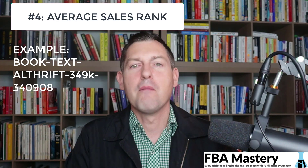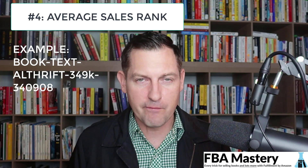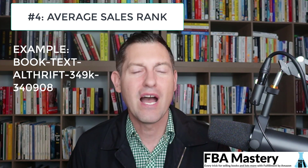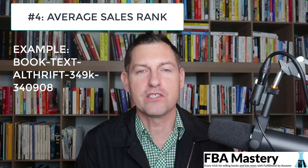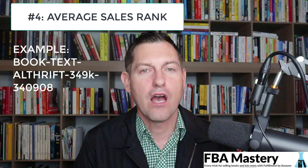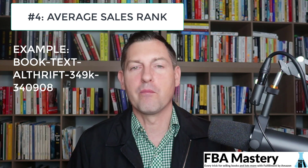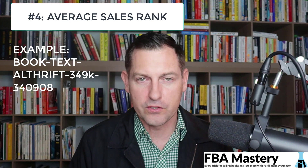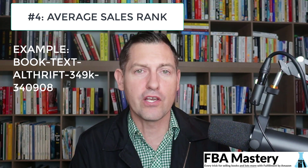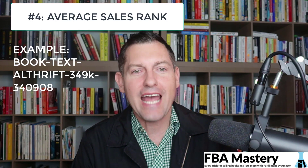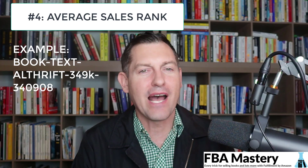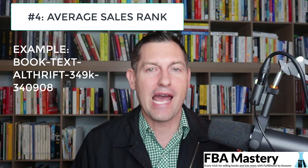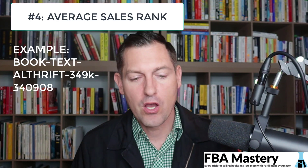Number four: average sales rank. I'm a massive fan of this one. When I'm repricing, I don't just want to know the current rank — which is easily accessible. I want to know the average rank, which is a much more accurate representation of how an item is selling. You can get average rank from your scanning app, from Keepa, or other sources. When repricing, I've got to know the actual demand for this item, not just what demand looks like right at this particular moment.